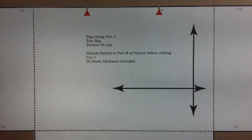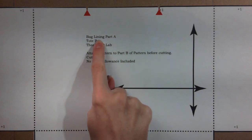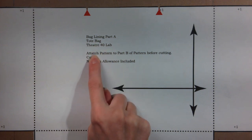Each pattern piece has information printed on it. The name of the pattern piece is listed and underneath the project the pattern piece belongs to, followed by the class it is for. There is a note to attach the piece to part B before cutting.